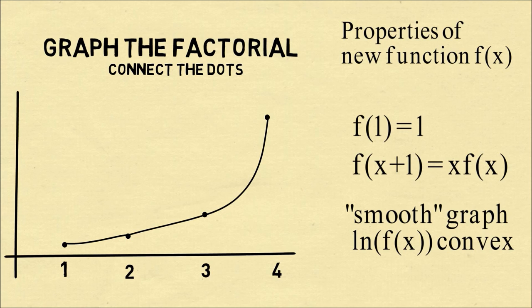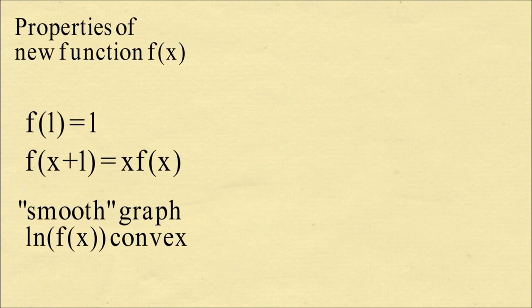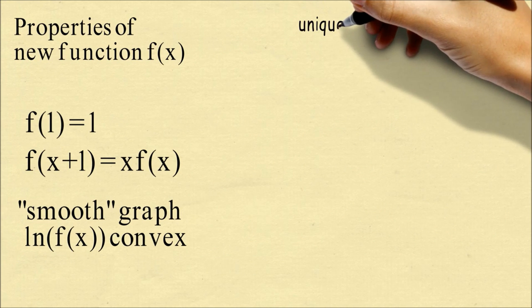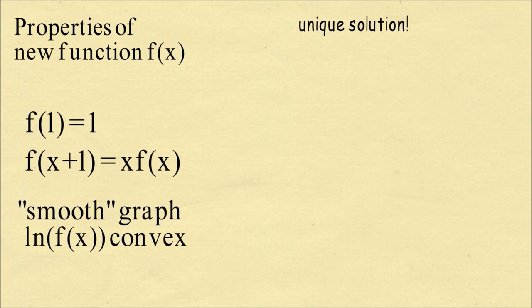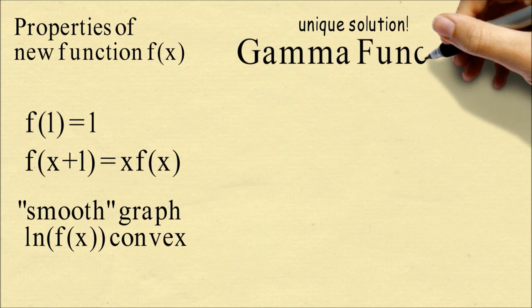A final property is we want the graph to be smooth. And one way we can do that is we could say that the log of f of x needs to be convex. So that's a function, I won't get into the details, but the reason we have this is if you have these conditions, there's actually a unique solution. There's one function, the gamma function, that satisfies these three conditions.